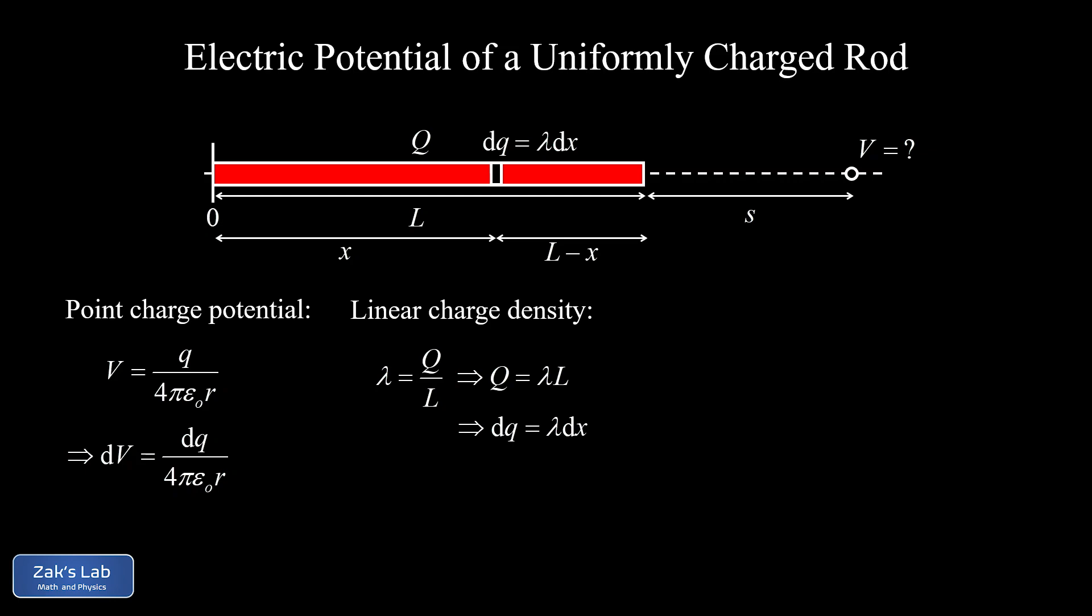Now we're ready to start setting up our integral. What I want to do is express this dV entirely in terms of the integration variable x. So dV is dq over 4πε₀r, but dq can be written as λdx. And then r is the distance between dq and the observation point, which we can write as S plus L minus x. Now that our dV is phrased entirely in terms of a single variable x, we're ready to integrate this thing. Starting from the very beginning, the total potential at the observation point is the sum of all the contributions to that potential. And this is what an integral does - it's a summation device for adding up infinitely many infinitesimal contributions.